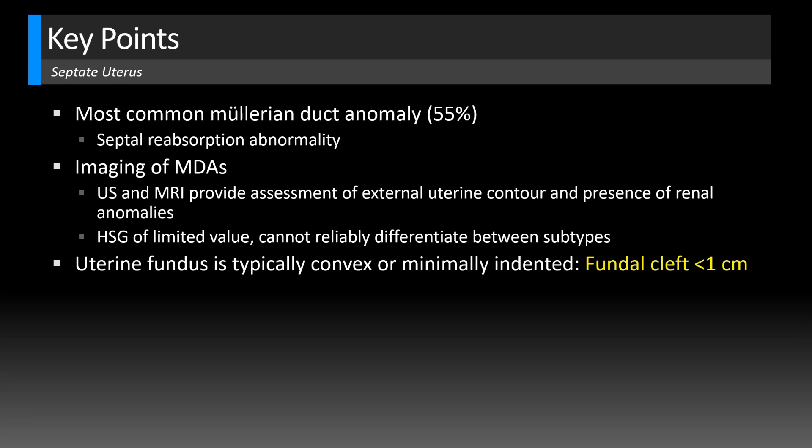With septate uterus, the fundus is usually convex — it may be minimally indented, but if there is a fundal cleft, it should be less than one centimeter. More than one centimeter should prompt consideration of bicornuate or didelphic uterus. That fundal cleft measurement has been found to be 100% sensitive and specific in differentiating these fusion abnormalities. You should always be skeptical of 100% claims, but the point is it's extremely accurate — as long as you have a nice coronal oblique view of that uterine fundal contour.